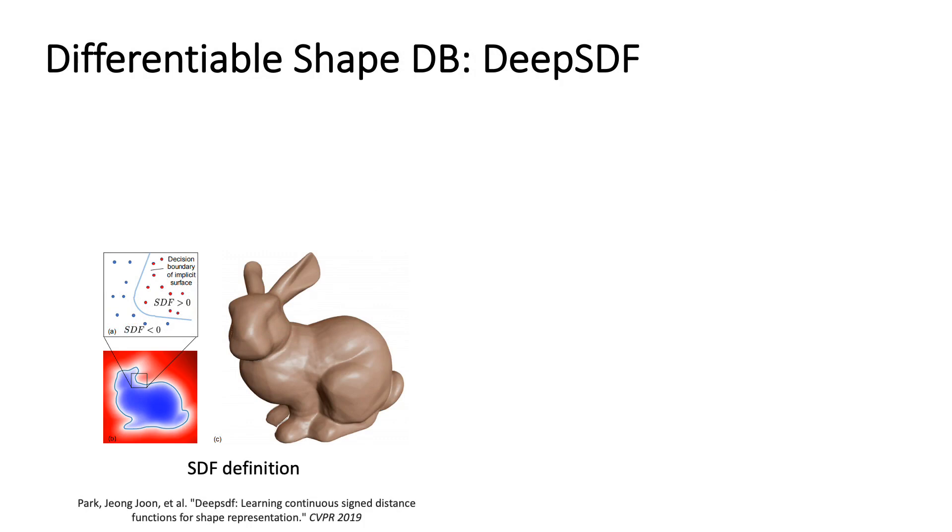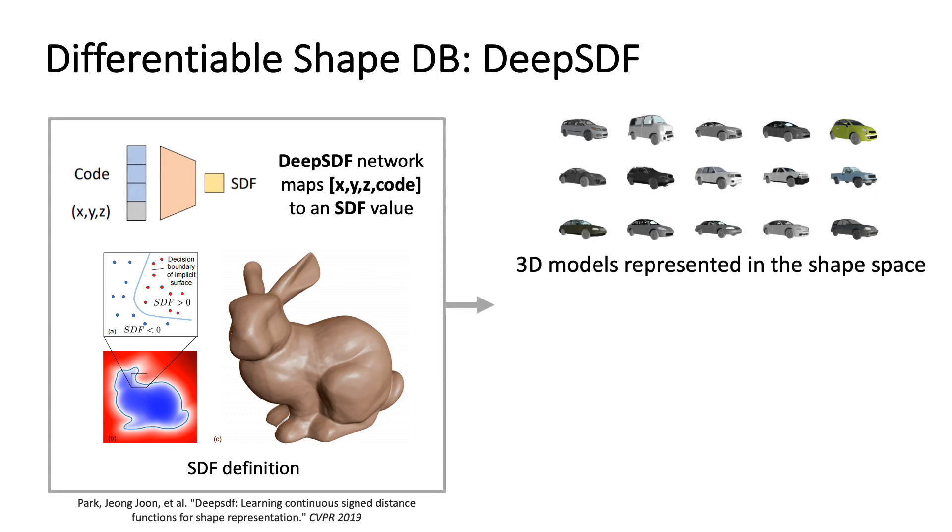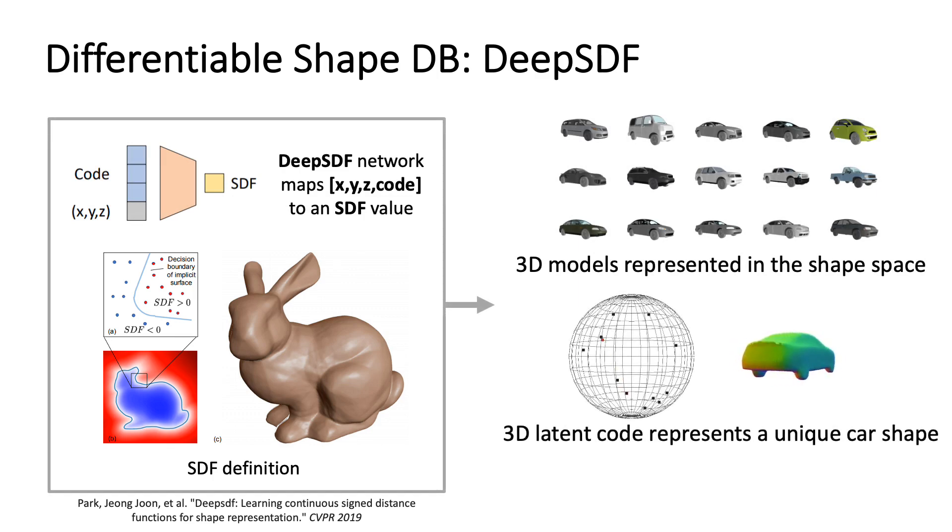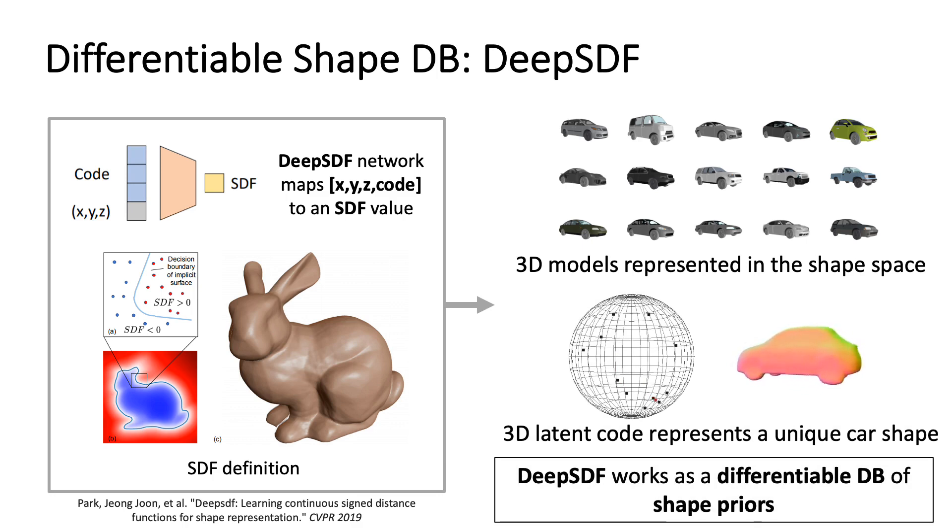Our differentiable shape database is based on DeepSDF. The idea is to transform input models into signed distance fields in which each value corresponds to a distance to the closest surface. DeepSDF allows embedding a collection of watertight models into a single neural network. In our case, this is a collection of car models representing the most common car classes you see on the road. Eventually, DeepSDF forms a shape space of implicit surfaces that can be queried using the provided latent code.